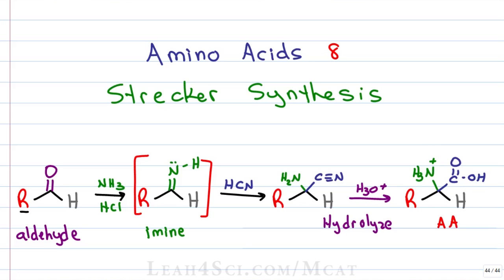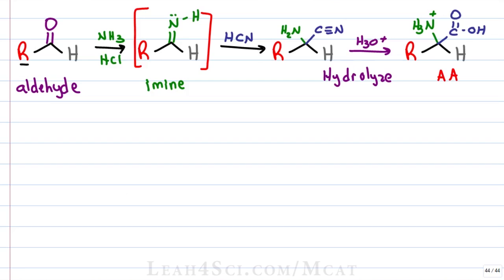Notice that the amino acid is not drawn in zwitterion form. Instead, the carboxylic acid is protonated but so is the nitrogen, because the final step is carried out in acid, meaning the pH is very low — lower than all the pKa values — and everything will be protonated. The goal is to start with a carbon chain that has your amino acid side chain and then add the backbone, add the nitrogen, and add the carboxy. This is the reverse of the Gabriel amino acid synthesis, which we'll look at in the next video, where we start with a backbone and work to add the side chain.